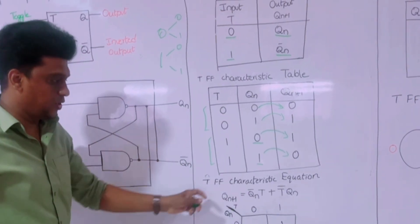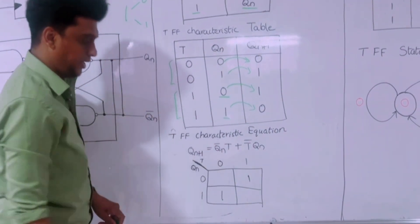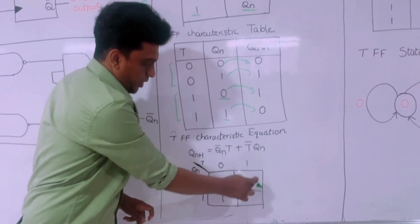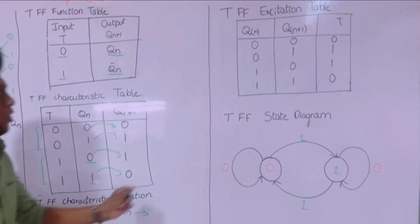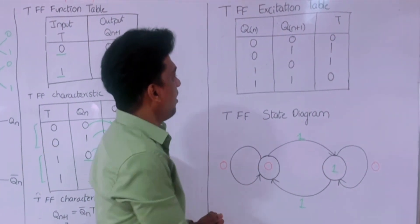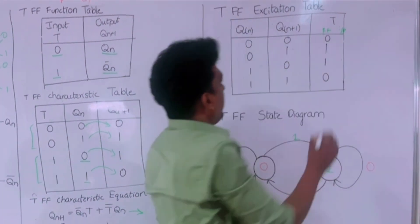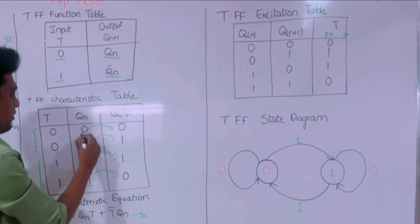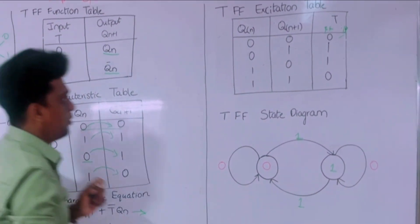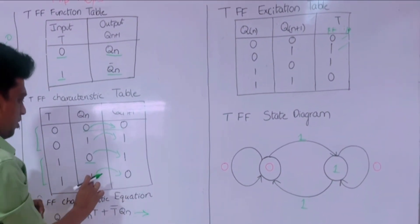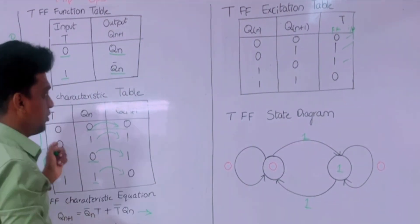From the characteristic equation, we define the K-map. We have Qn and T axes, grouping them separately. The equation is: Qn+1 = Qn-bar·T + T-bar·Qn. Then comes the excitation table, grouping present state and next state with the T flip-flop input. For 0,0 the input is 0. For 0,1 the input is 1. For 1,0 the input is 1. And for 1,1 the input is 0.